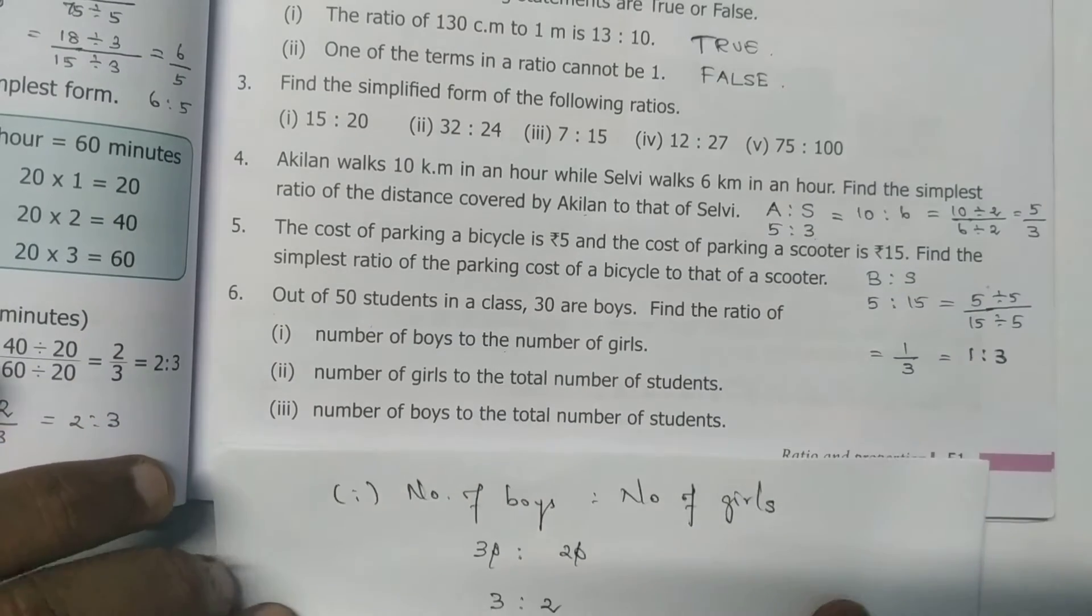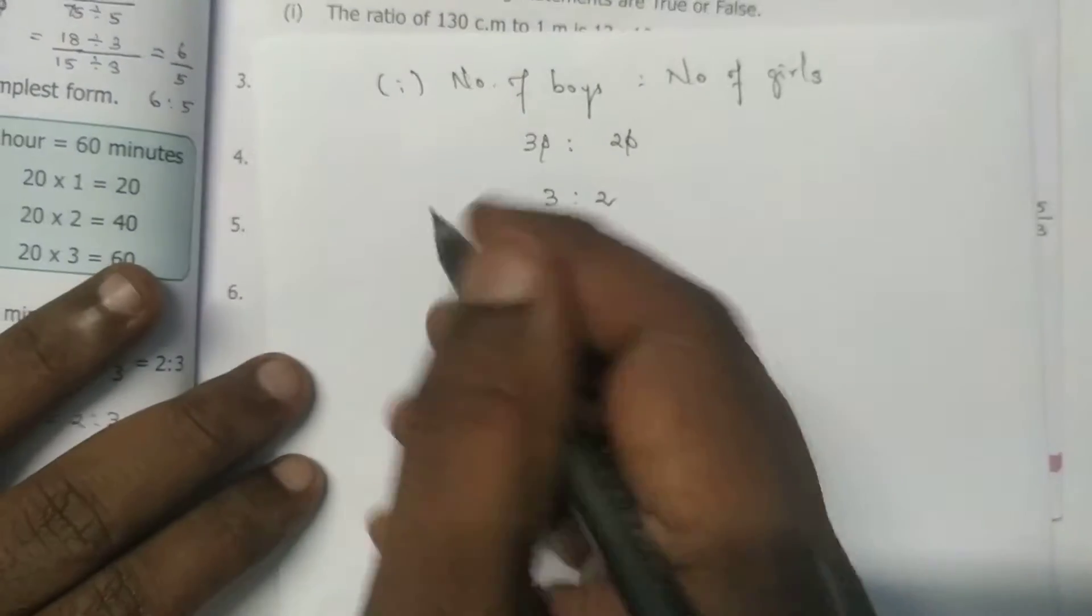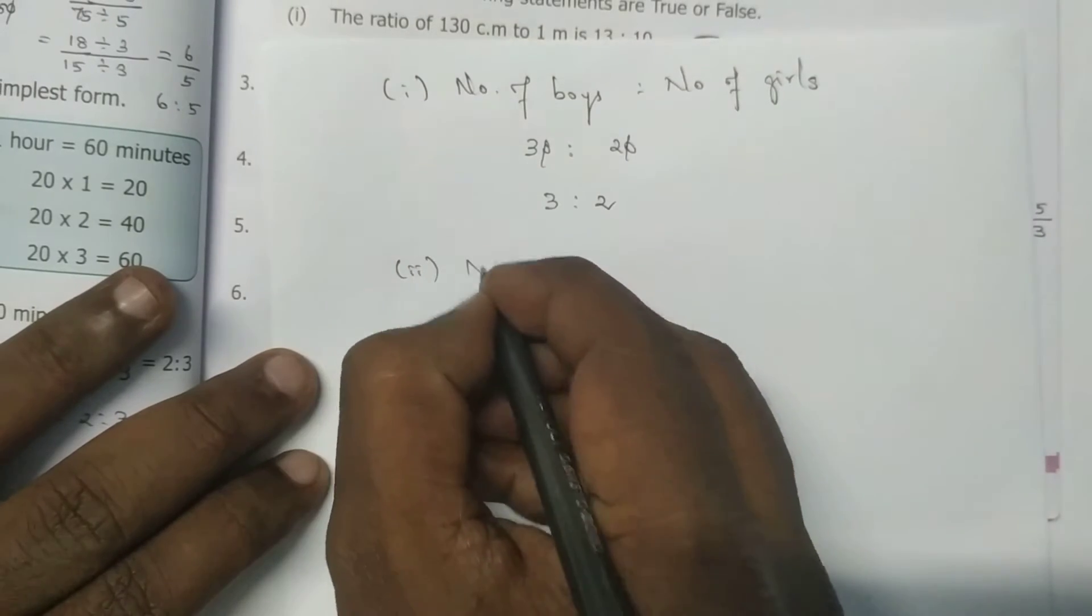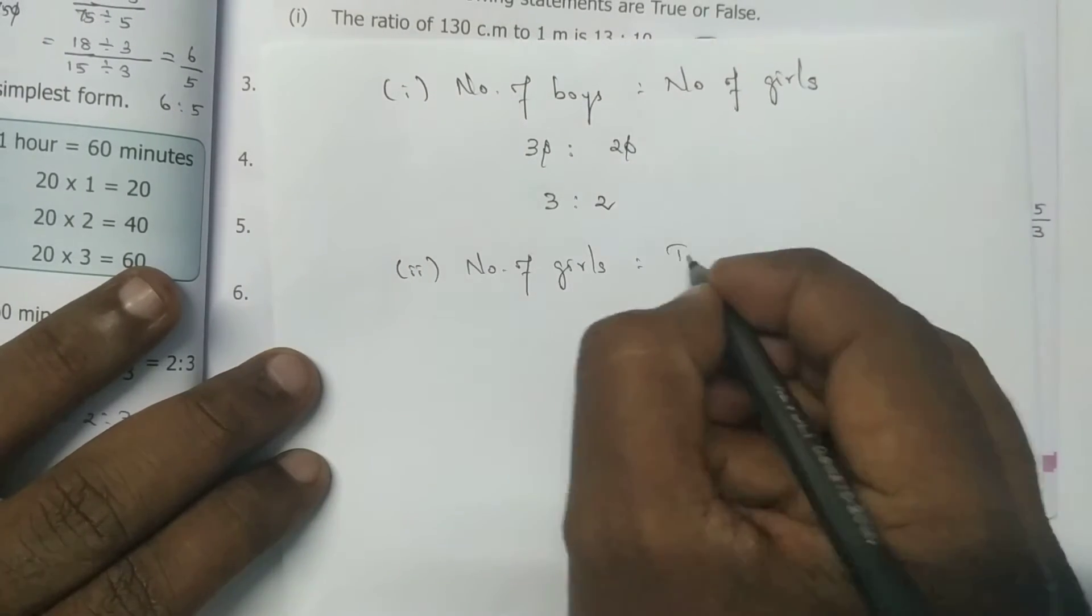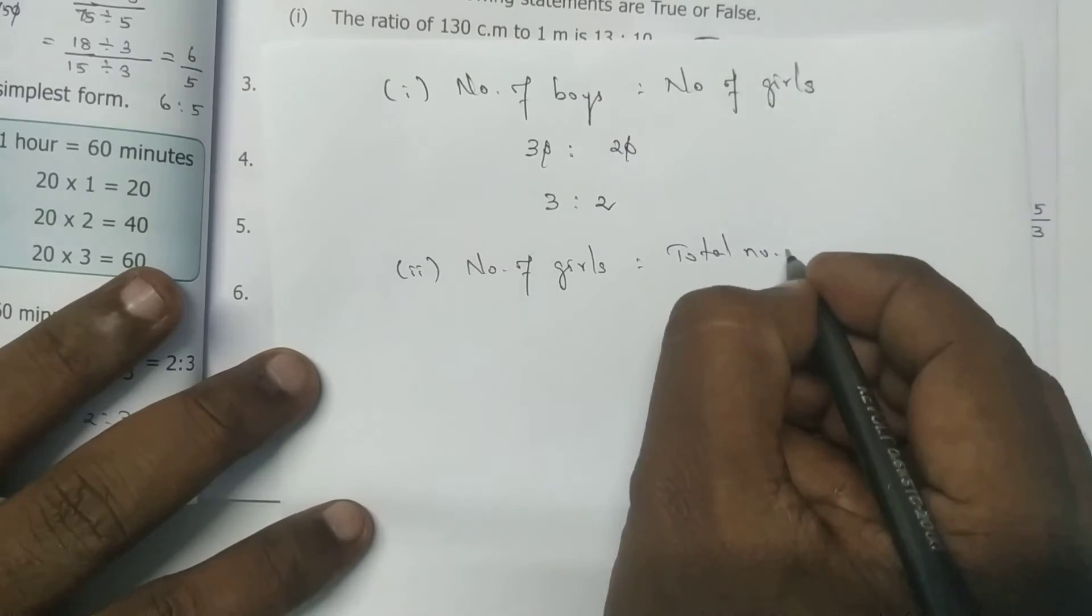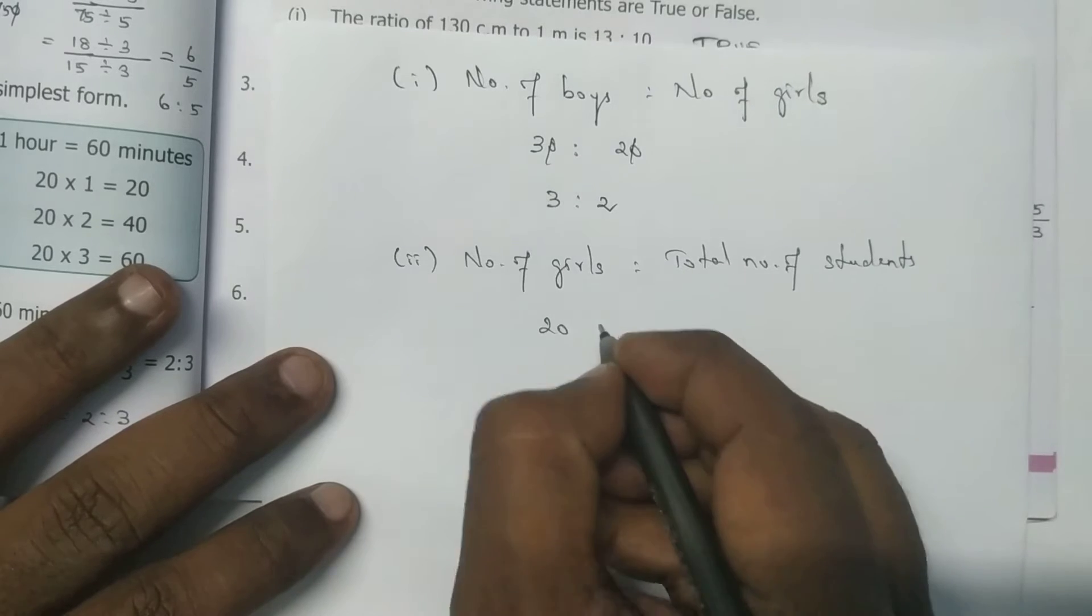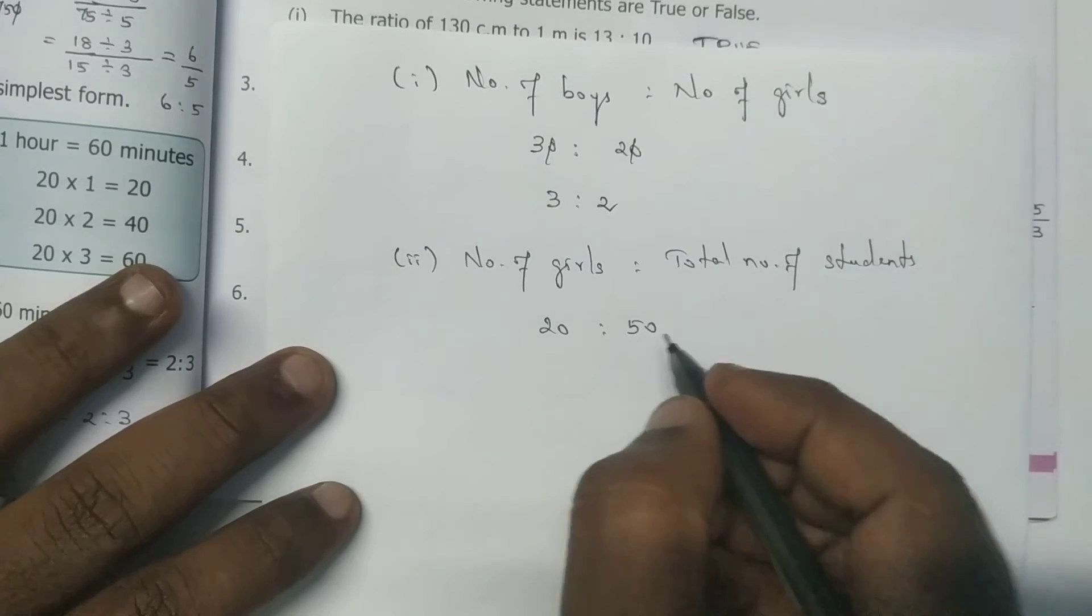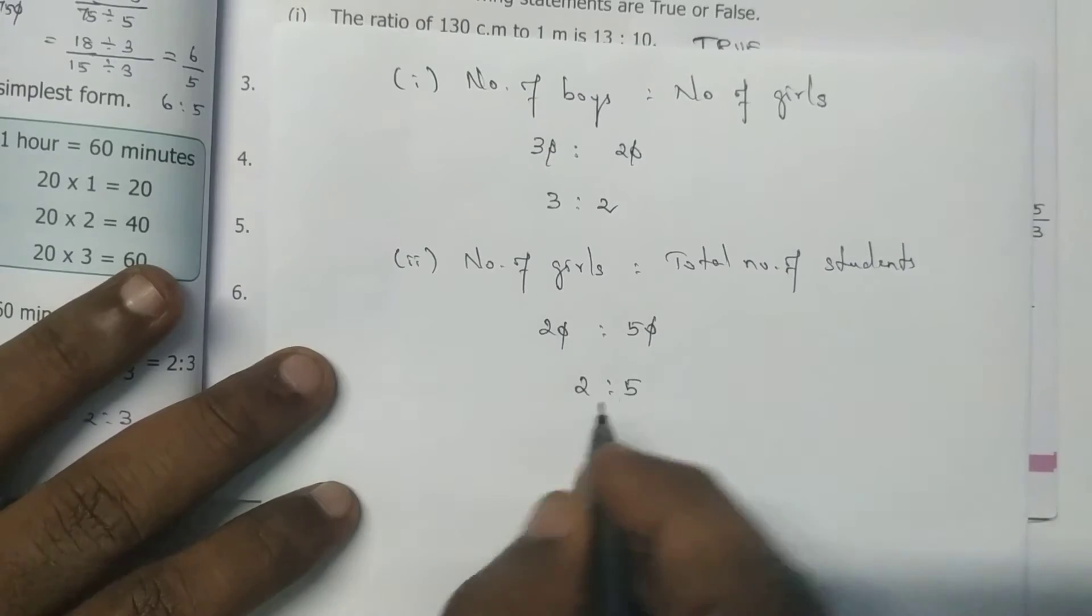Second one: number of girls to the total number of students. Number of girls, total number of students. So girls 20, total 50. Zero to zero, cancel it. 2 is to 5.